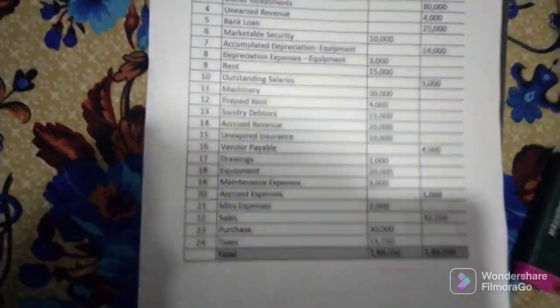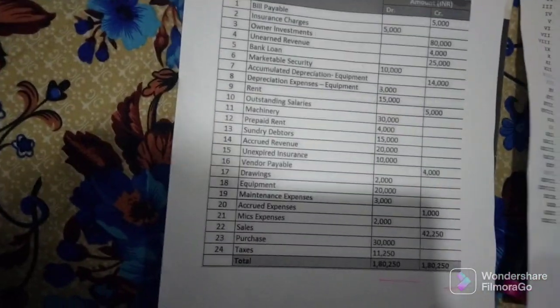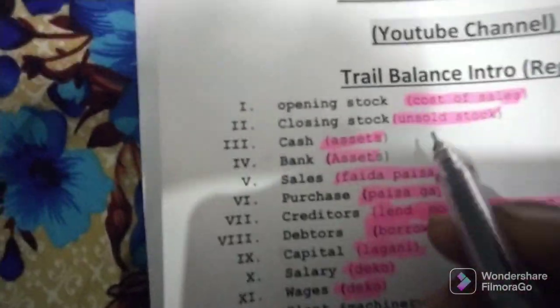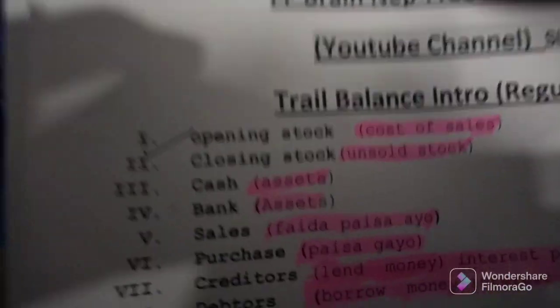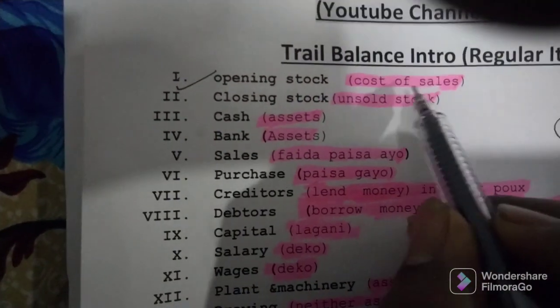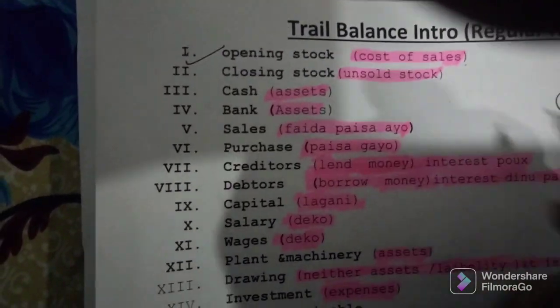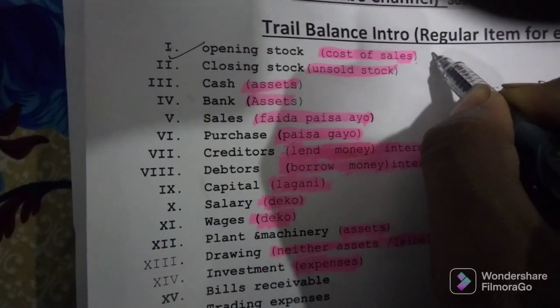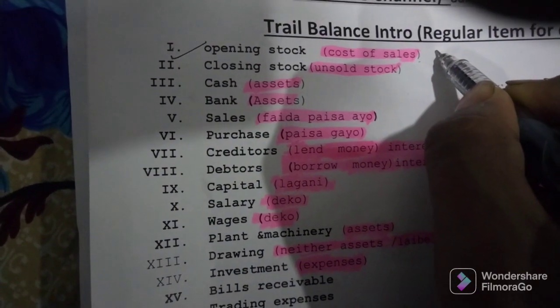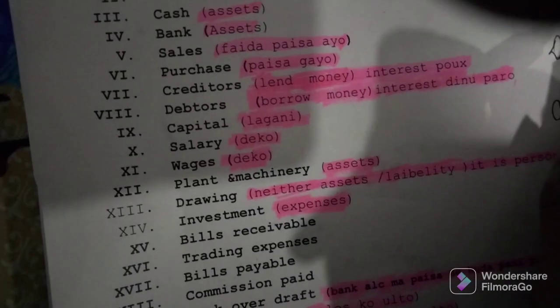So first, let us go through the regular items one by one. Regular item number one: opening stock. Opening stock is related to the cost of sales. Your business opening stock — cost of sale — is an expense, so it goes to debit. Expenses go to debit side.